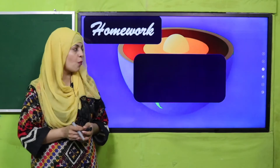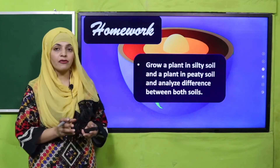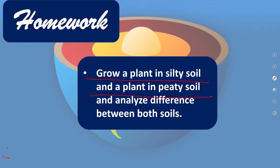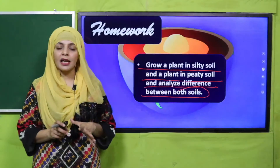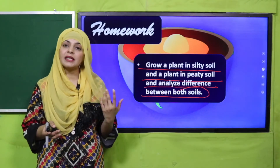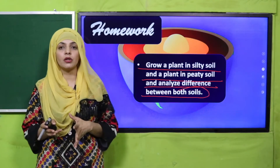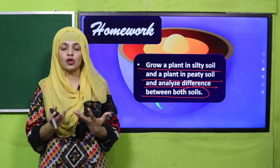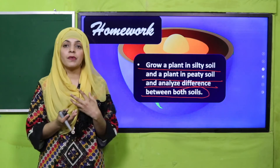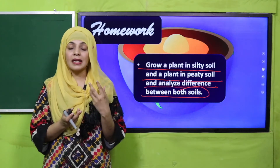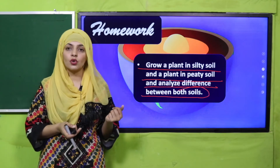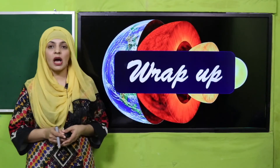My dear students, for homework you have to grow a plant in silty soil and a plant in peat soil, and analyze the difference between both soils. Aapne dono soils ko observe karna hai — unke texture ko, color ko, aur iske alava unki water holding capacity kaisi hai — aapne saari cheezon ko discuss karna hai.